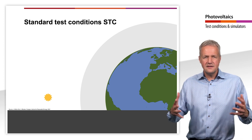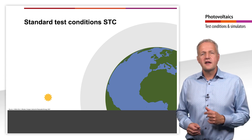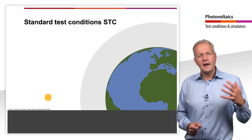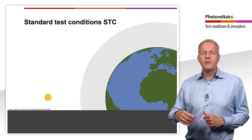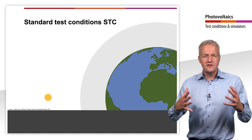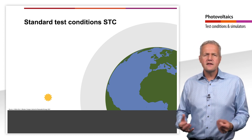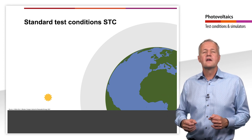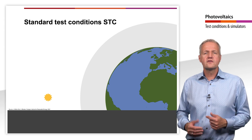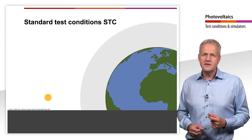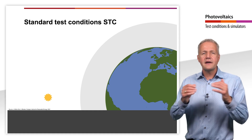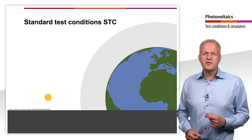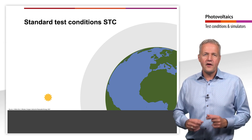First, the STC contain a specification for the spectrum and the irradiance of the light source. Ideally, the solar cell would be irradiated with sunlight. However, since the irradiance and the spectrum of sunlight are subject to strong fluctuations, artificial light sources are usually used to meet the STC. The STC are based on the irradiance and light spectrum of the sun on a clear summer day. The spectrum specified here is the AM1.5 spectrum.